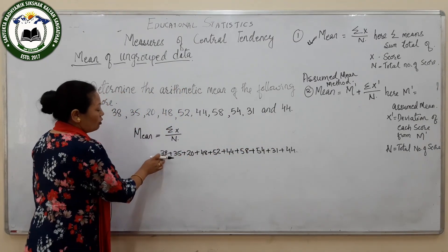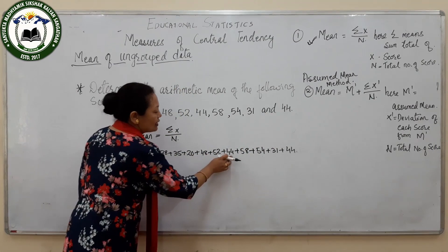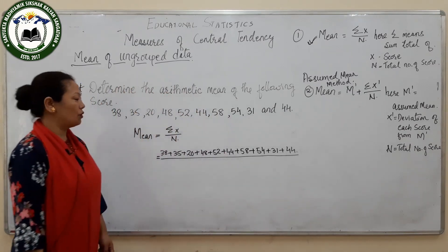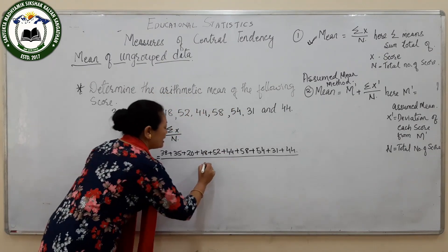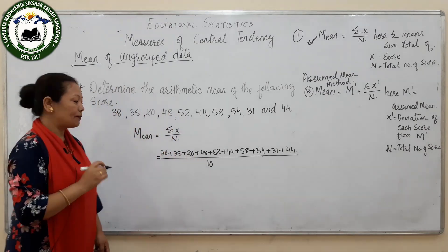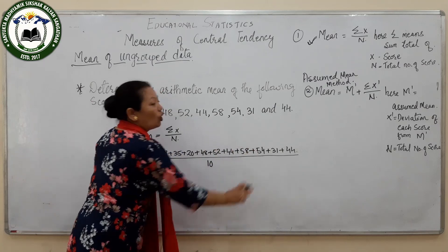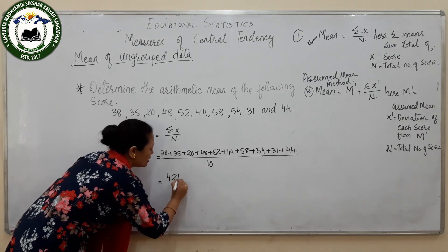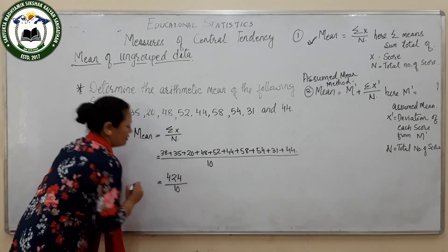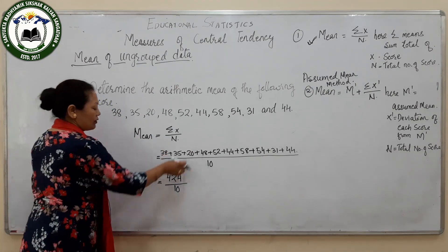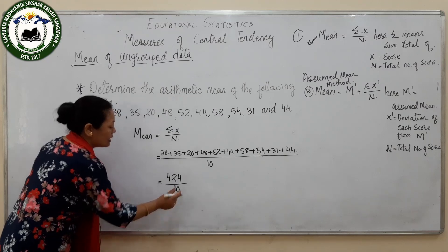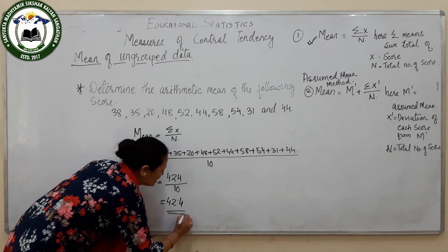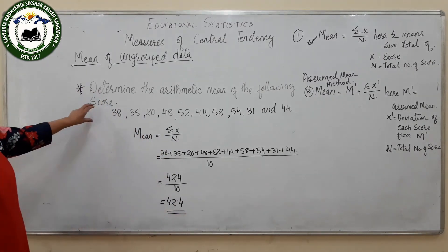We have 10 scores, so all of these have to be divided by the number of scores, which is 10. When you add all these numbers you get 424, divided by 10. So the mean is 42.4. This is the mean of these isolated scores.